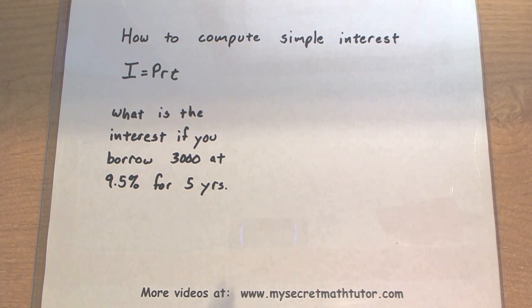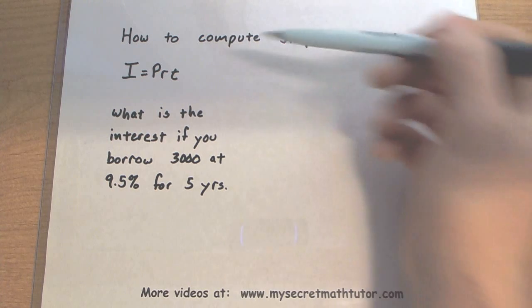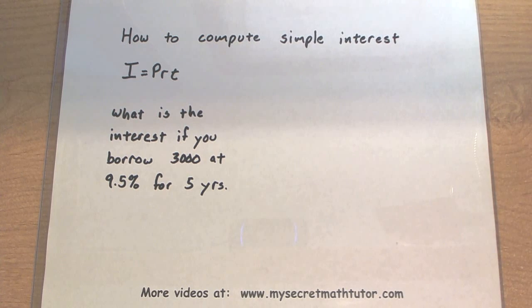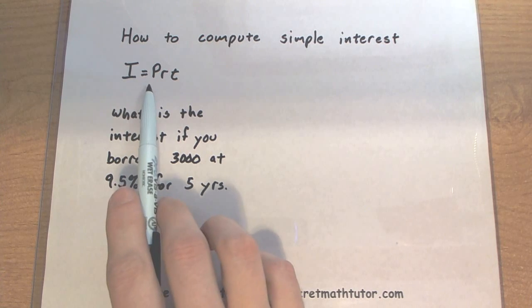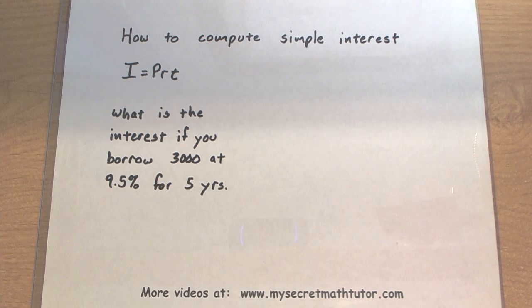Welcome to My Secret Math Tutor. I'm going to show you how you can compute simple interest using this formula right here. The way this formula works is it says that interest is equal to your principal times your rate times time.